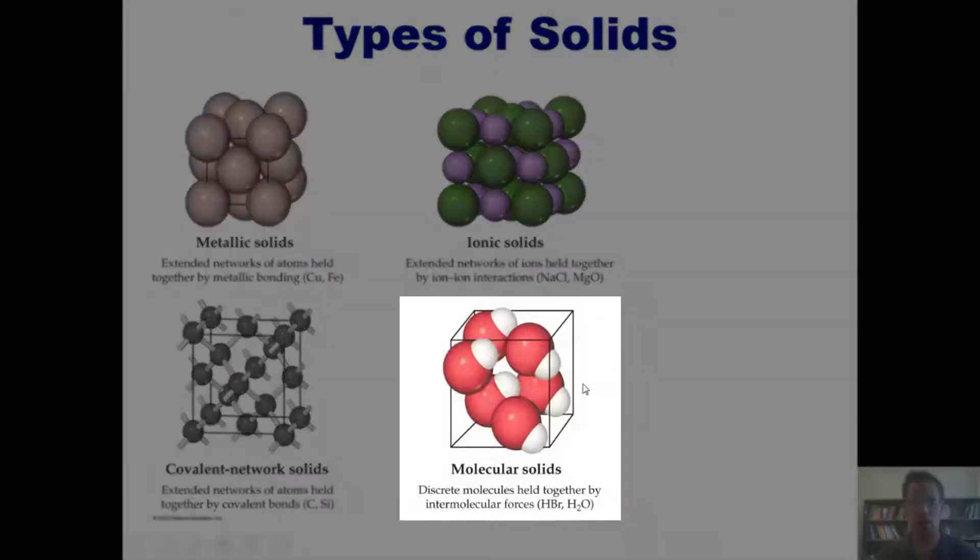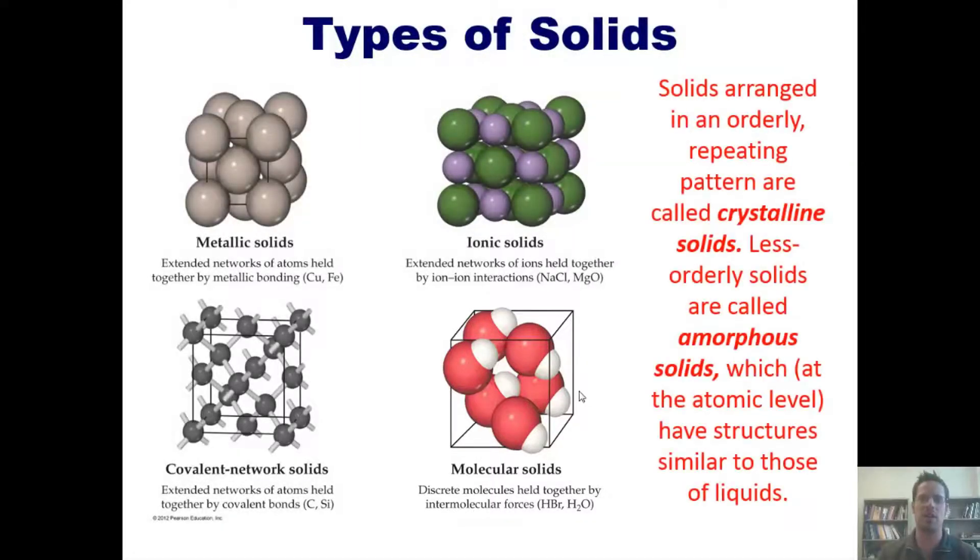And in molecular solids, we have separate molecules that are all just sticking together via intermolecular forces that we discussed back in Chapter 11. Solids arranged in an orderly repeated pattern are called crystalline solids. Less orderly solids are called amorphous solids, which at the atomic level have structures similar to those of liquids.